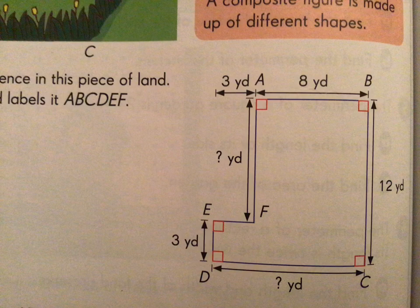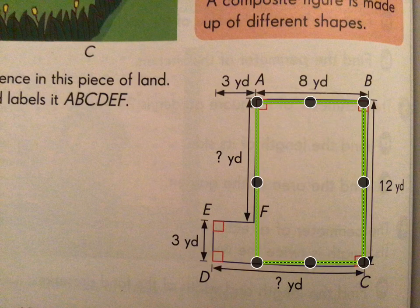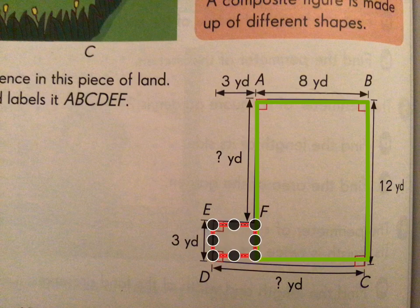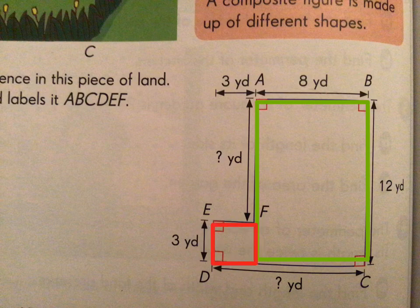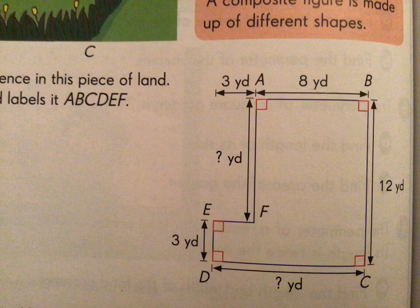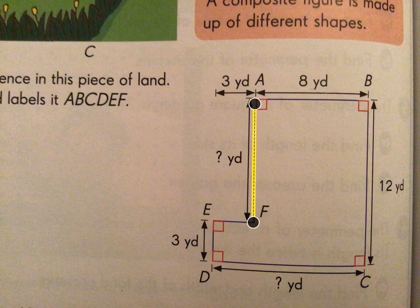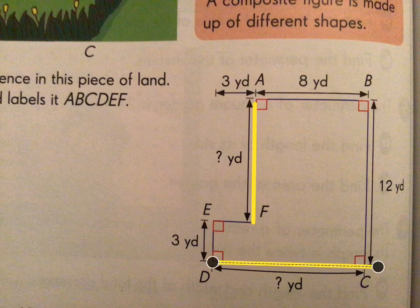Here's our first composite figure. You can see it is made up of a rectangle and over here is a square — so this shape is made up of a square and a rectangle, which is why it's called a composite figure. We need to find the perimeter, but we have a little bit of an issue in that we don't know side length AF and we don't know side length DC.